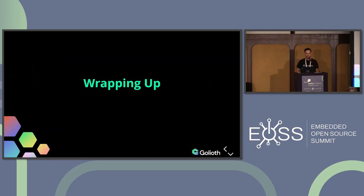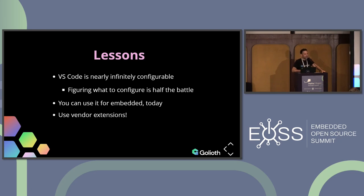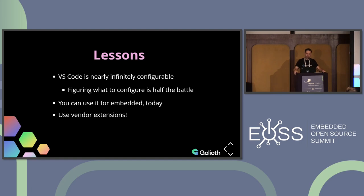Wrapping up — a couple of lessons. VS Code is very configurable, and I find it sometimes overly daunting figuring out what you need to configure — that will be half the battle. Looking at other people's configuration files on GitHub is how I learned some of this stuff, but it does have its benefits because you can have the experience you want. And it may surprise some folks: you can do embedded development with VS Code — it's actually pretty serviceable. All the complexity I just showed you is something that's actually taken care of by vendor tools. If you're using Nordic hardware with Zephyr, you should definitely look at the Nordic extension for VS Code and any ones that come out in the future for your vendor of choice.